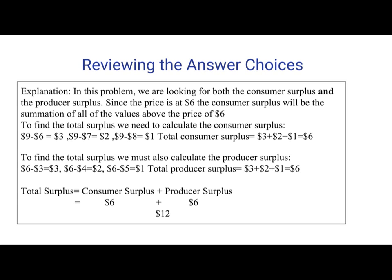Now we have to find the total producer surplus. We can calculate this by the following numbers: $6 minus $3 equals $3; $6 minus $4 equals $2; $6 minus $5 equals $1. So the total producer surplus is $3 plus $2 plus $1, which equals $6.